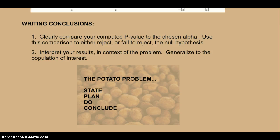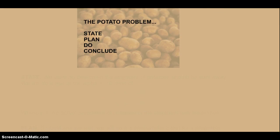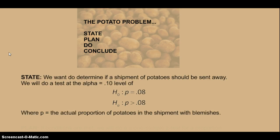So we're going to go through the four steps here. Okay, first step is our state. So we want to determine if a shipment of potatoes should be sent away. We'll do a hypothesis test at the alpha equals .10 level.